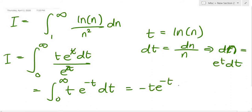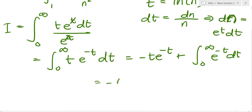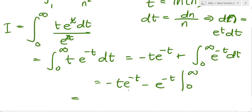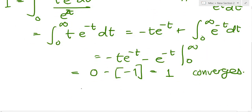We evaluate this using integration by parts, giving -t·e^(-t) plus the integral of e^(-t) dt, which is -e^(-t). Evaluating [-t·e^(-t) - e^(-t)] from 0 to infinity: at infinity, e^(-t) dominates so everything goes to 0; at 0, the t term vanishes and we get -1. So the result is 0 - (-1) = 1. The integral converges, so the series converges absolutely.